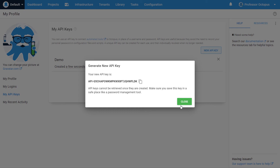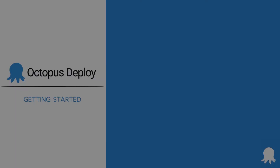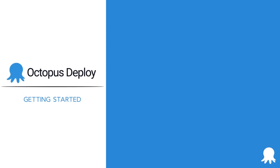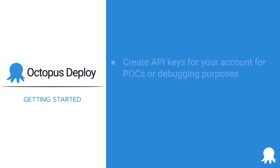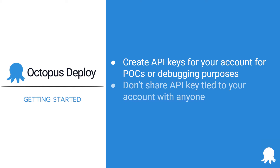That's it — you have created your first API key. Here are some tips to keep in mind when creating API keys for Octopus Deploy. API keys associated with your login should be used sparingly, for example when writing a POC script or trying out something with the API. Don't share your API keys with anyone. Any action performed using an API key associated with your account will show up in the audit log as you performing the action.